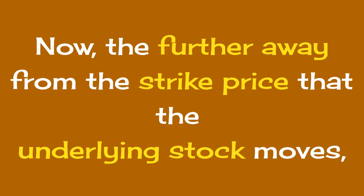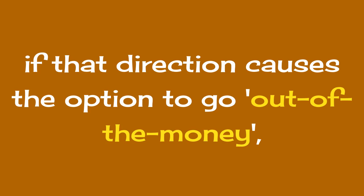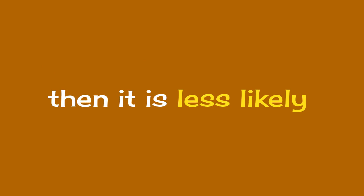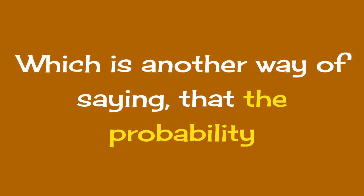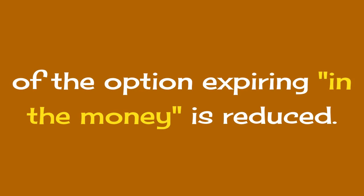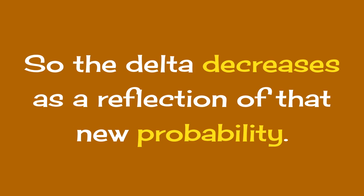Now the further away from the strike price that the underlying stock moves, if that direction causes the option to go out of the money, then it is less likely that the option contract will have any intrinsic value at expiration date. Which is another way of saying that the probability of the option expiring in the money is reduced. So the delta decreases as a reflection of that new probability.